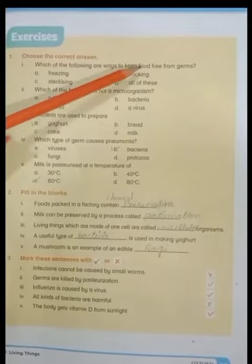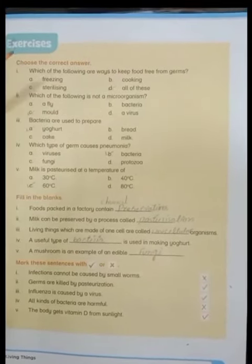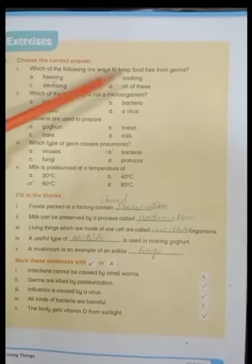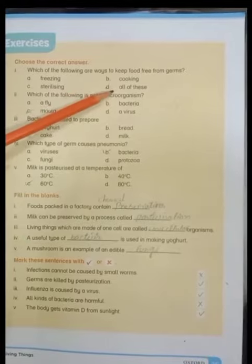Which of the following are ways to keep food free from germs? The options are freezing, cooking, sterilizing, or all of these. The answer is all of these. So we keep our food from germs by freezing, cooking, sterilizing, and all of these methods.